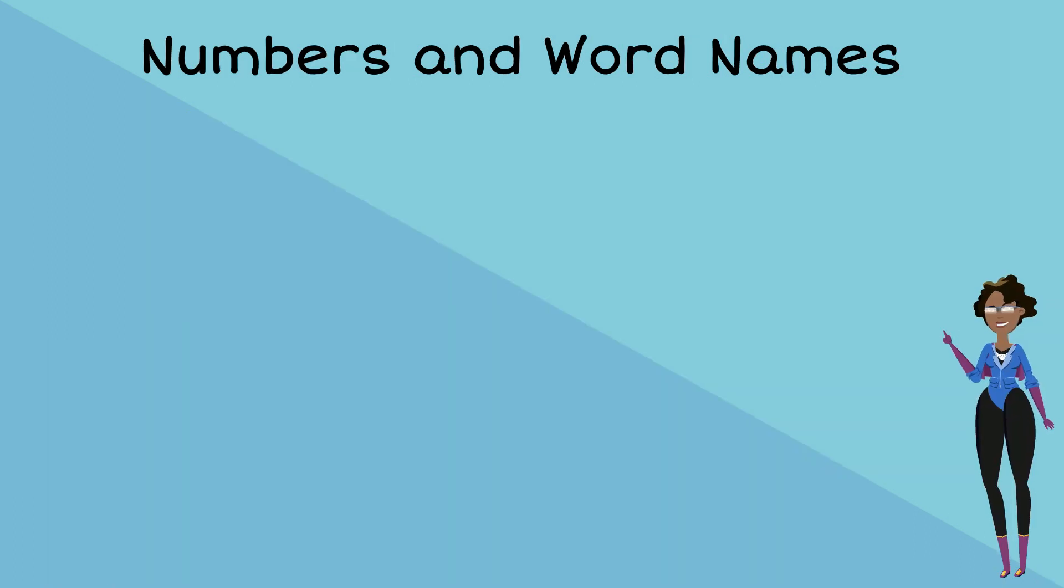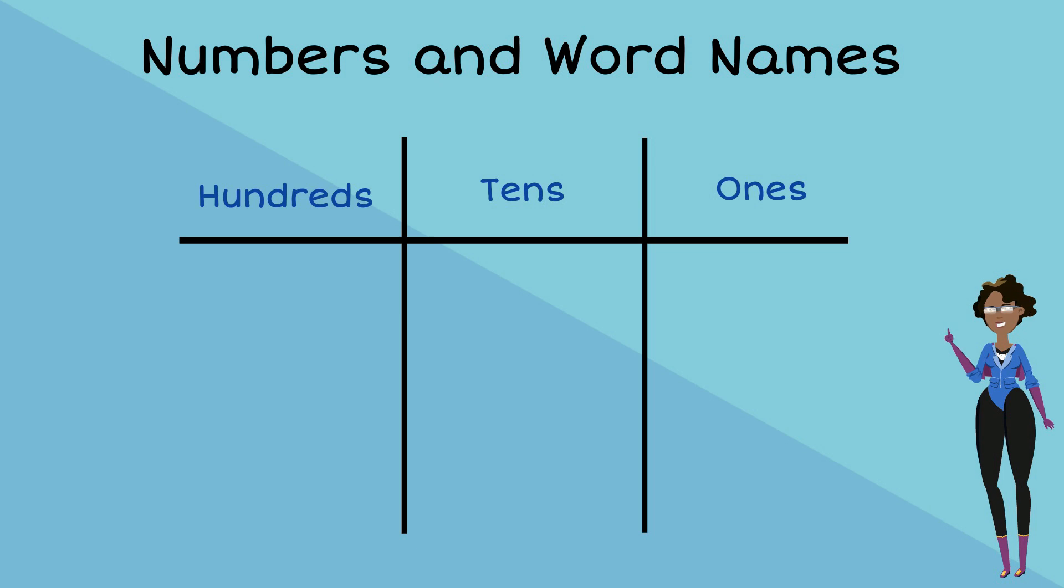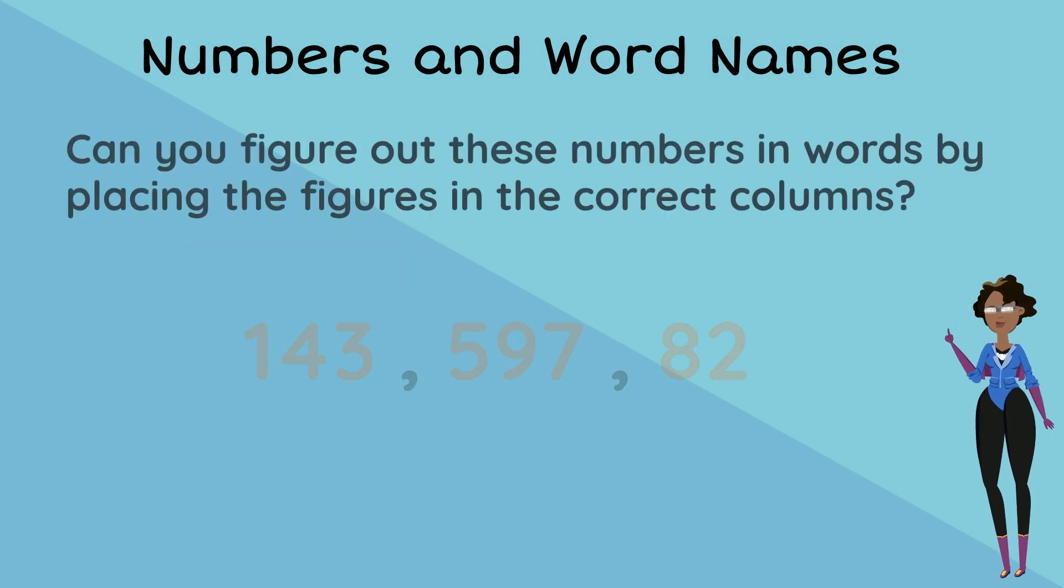When writing the word name of a number, we always start with the number furthest to our left, which is the biggest number. Don't forget, we're looking at the hundreds, tens, and ones columns. Can you figure out these numbers in words by placing the figures in the correct column?